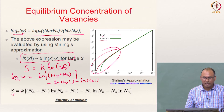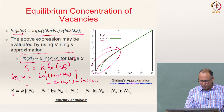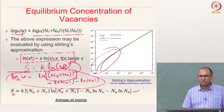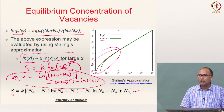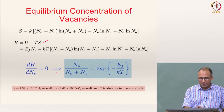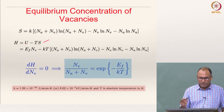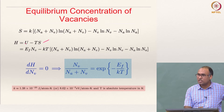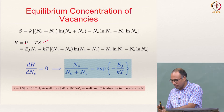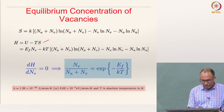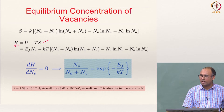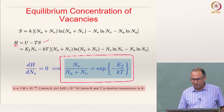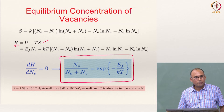Once we have the entropy expression and substitute U = Nv · Ef into F = U − T·S, we differentiate F with respect to Nv and set it equal to zero. This gives the result: Nv / (Na + Nv) = exp(−Ef / KT).